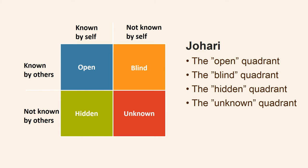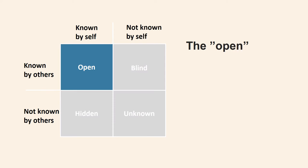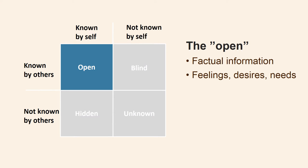Now follows how each quadrant must be understood. The open quadrant represents things that both I know about myself and that you know about me. I know my name and so do you if you have explored our website — it is factual information. But the quadrant can also contain feelings, desires, and needs. In the beginning when we know each other, the quadrant is not really large, since there has been little time to exchange information. But the longer we know each other and the more confidence we have in each other, the more the window shades move down or to the right — we know more about each other, you know more about me.